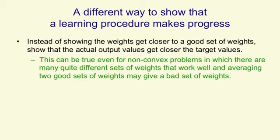This can be true even for non-convex problems in which averaging the weights of two good solutions does not give you a good solution. It's not true for perceptron learning. In perceptron learning, the outputs as a whole can get further away from the target outputs, even though the weights are getting closer to good sets of weights.